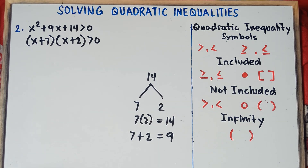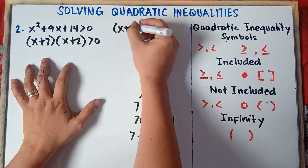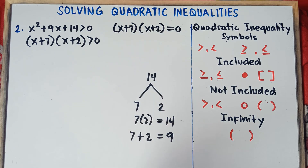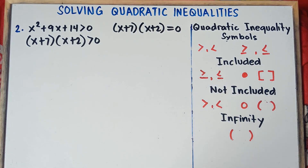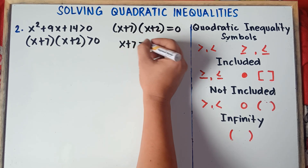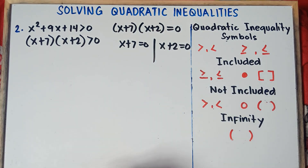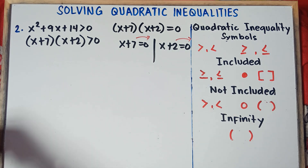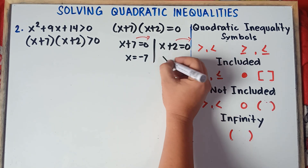The next step is we need to equate this to 0 to get the critical points, because we will be using the x-values on the number line. So: (x + 7)(x + 2) = 0, giving x + 7 = 0 and x + 2 = 0. To get the value of x, simply transpose: positive 7 becomes negative 7, and positive 2 becomes negative 2. Once you transfer across the equal sign, you change the sign.